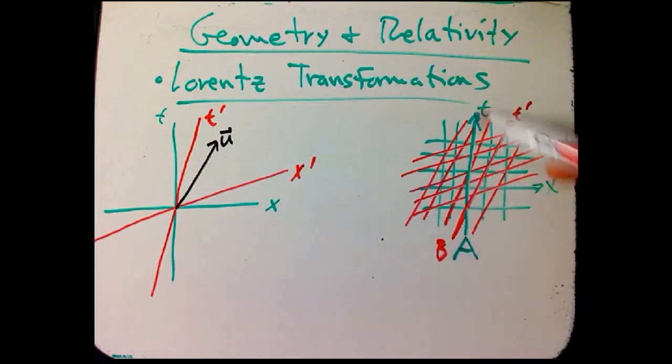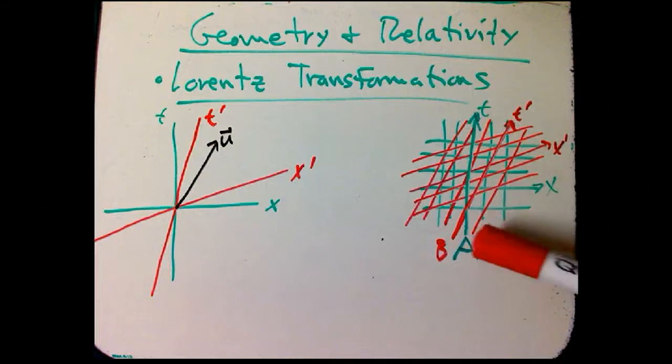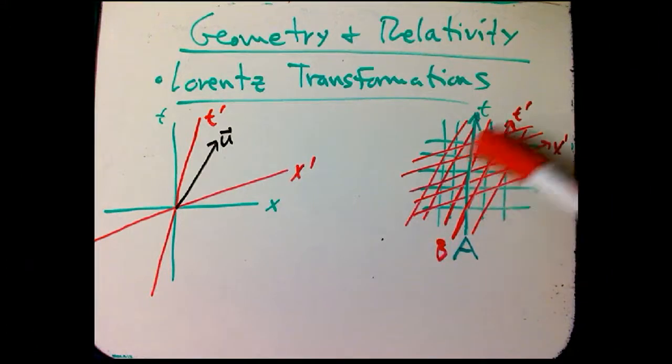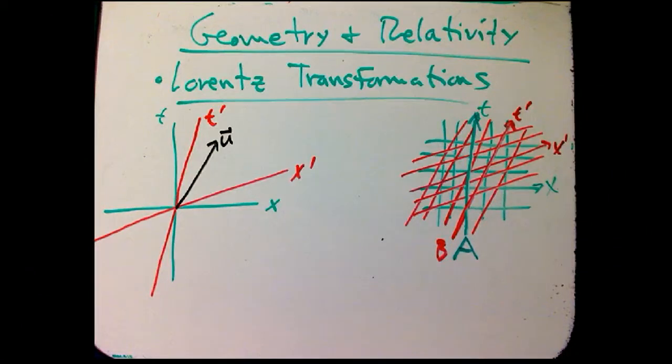And they're moving relative to each other. And that's what makes them use different coordinate systems. Remember, they should both be Lorentz coordinate systems, so that they're built out of orthogonal grids. And of course the reds really are orthogonal to each other. It just doesn't look like it.